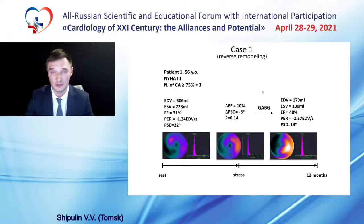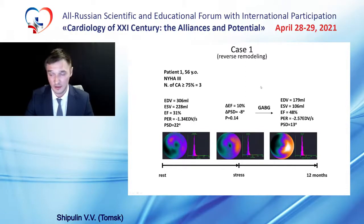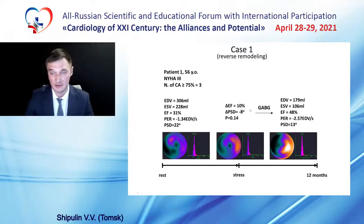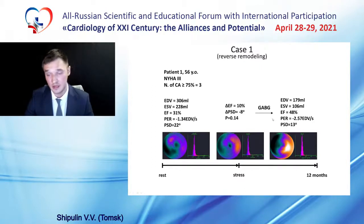Let me show you some examples. Here is the case of reverse remodeling: as you can see, left ventricle ejection fraction increases and dyssynchrony decreases during stress testing. After 12 months, a decrease of left ventricle volumes and dyssynchrony along with improvement in systolic function was observed.